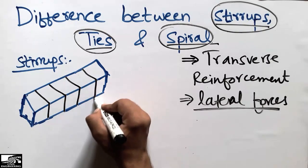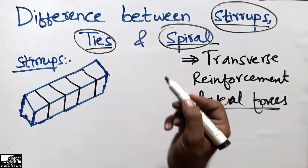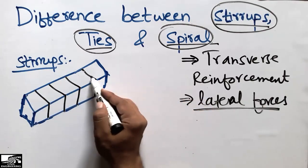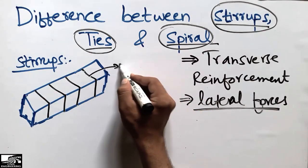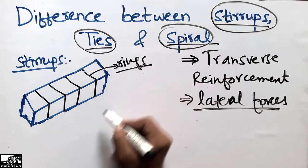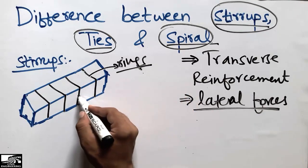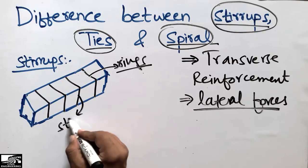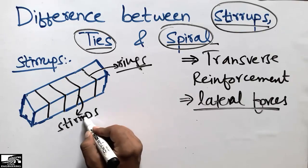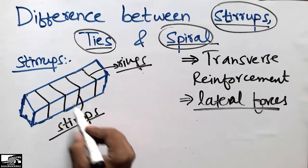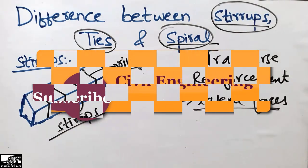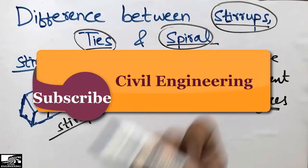This sidewise reinforcement — usually in the field, laborers call this type of reinforcement 'rings' — but that is not the technical term used in civil engineering. In civil engineering, we call it stirrups. This term is used specifically in the case of beams.